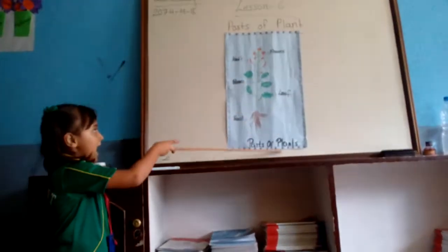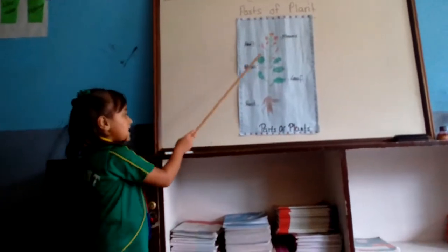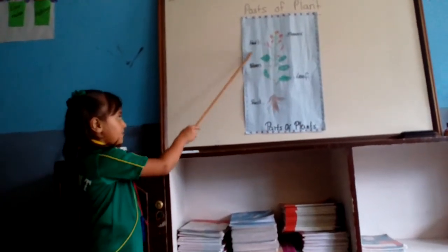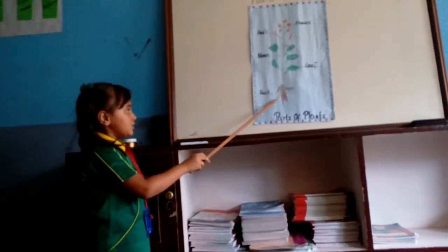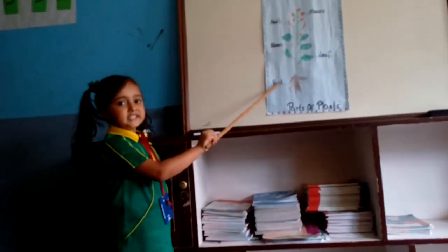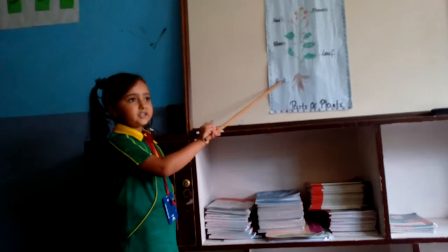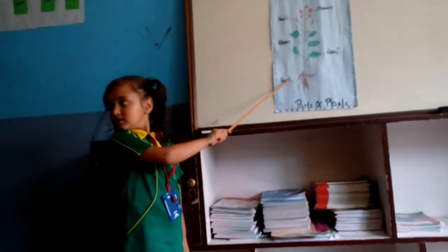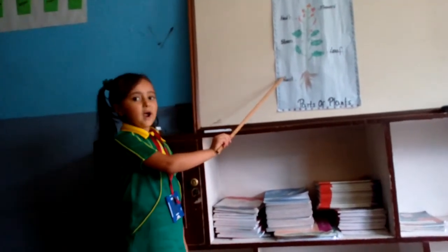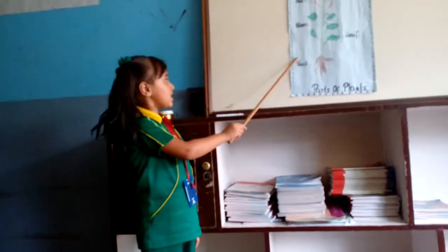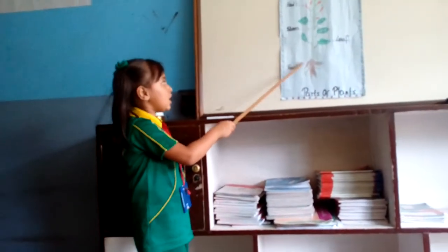This is a plant. This is the root — it has hidden roots. This is the root; it has hidden roots. It gets water and minerals from the soil.